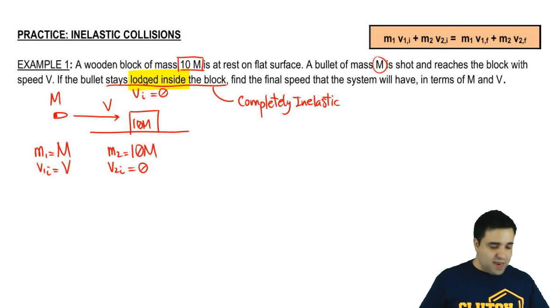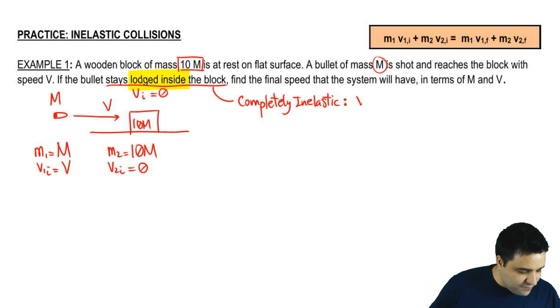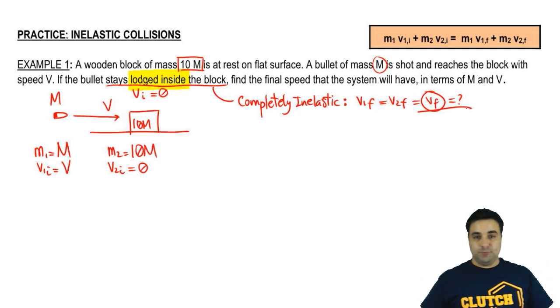Now, more important than knowing the name is to know what it means. It means that V1 final equals V2 final, which I can just write as V final. And that's what we want to know. What is V final?